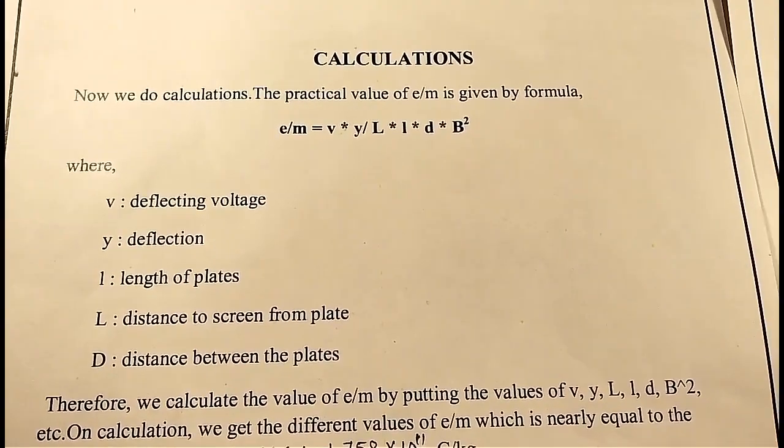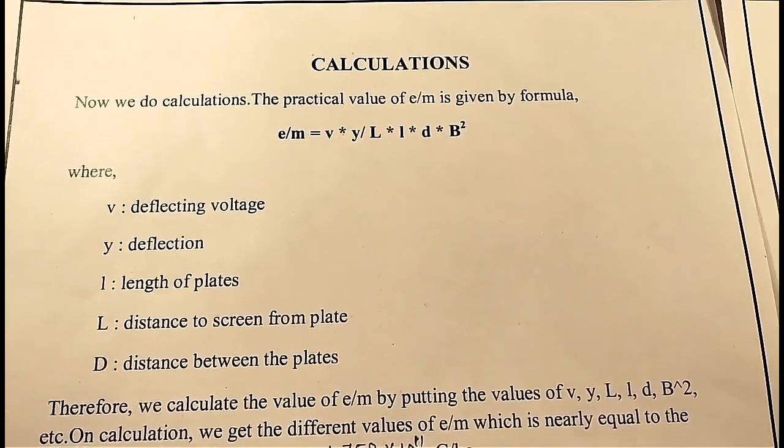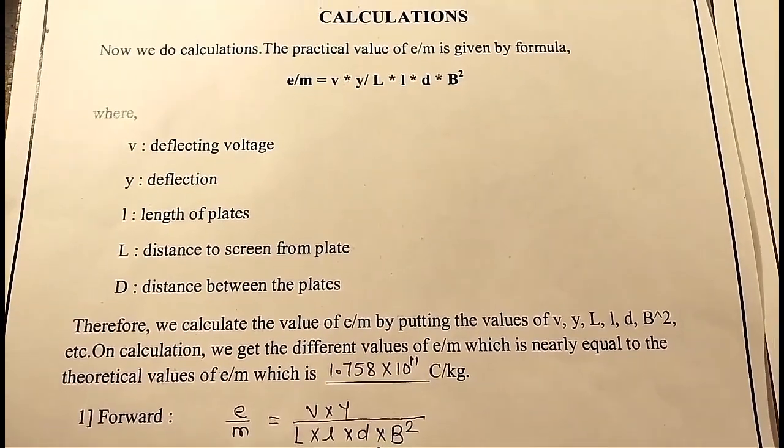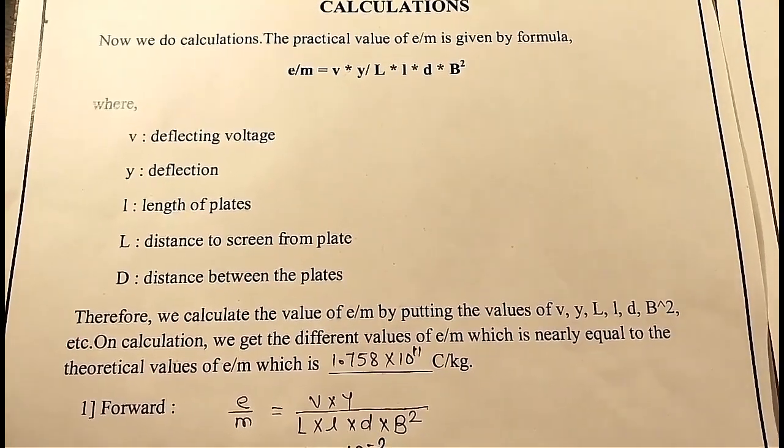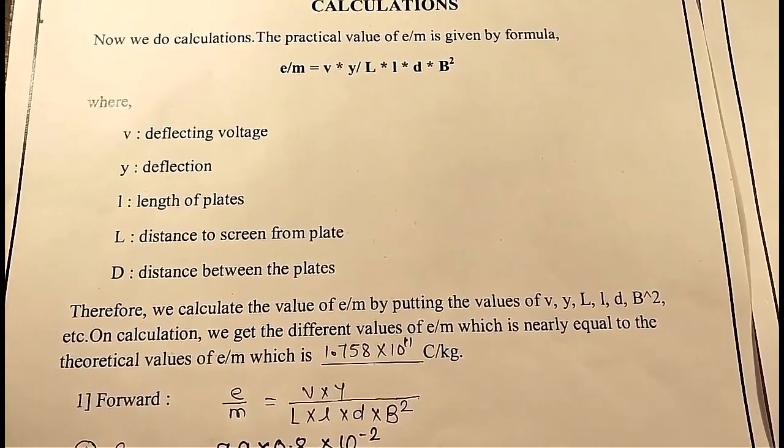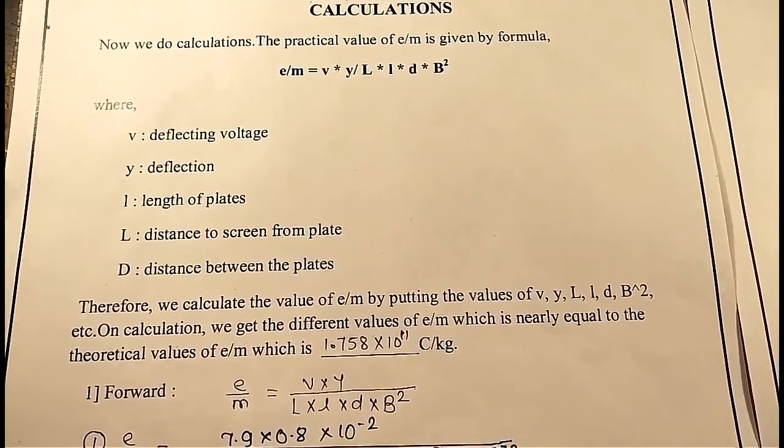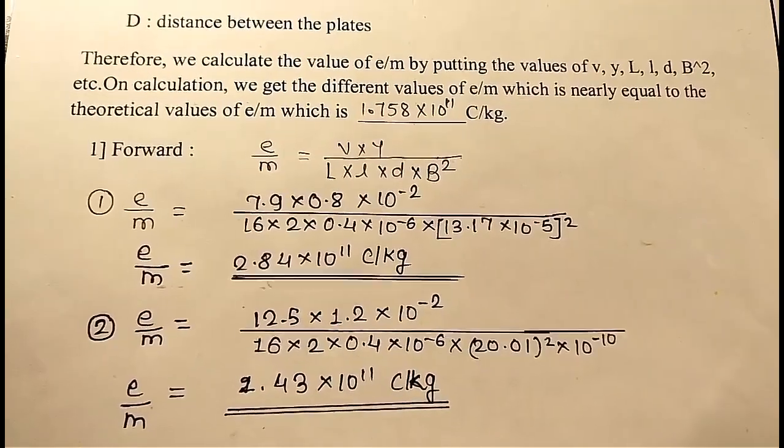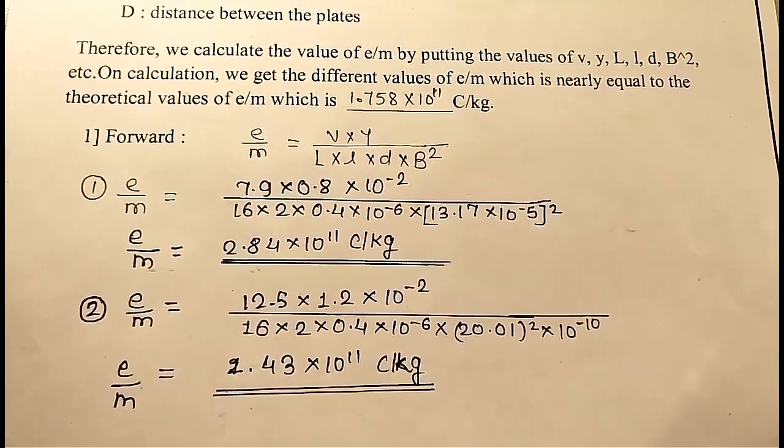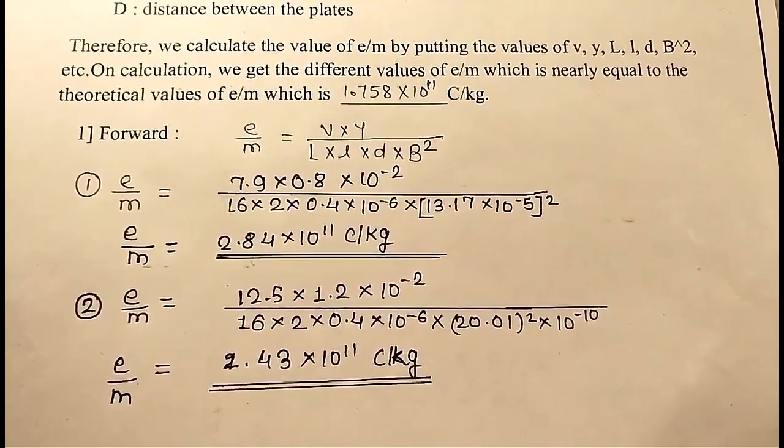Now we do calculations. The practical value of E by M is given by formula E by M equals V into Y upon L into l into d into B square, where V is deflecting voltage, y is deflection, l is length of plates, L is distance to screen from plate, and D is distance between the plates.